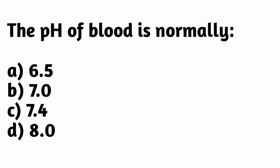The pH of blood is normally — the correct option is option C: 7.4.